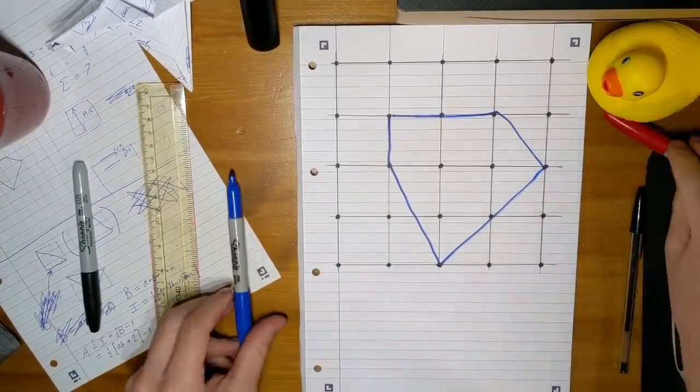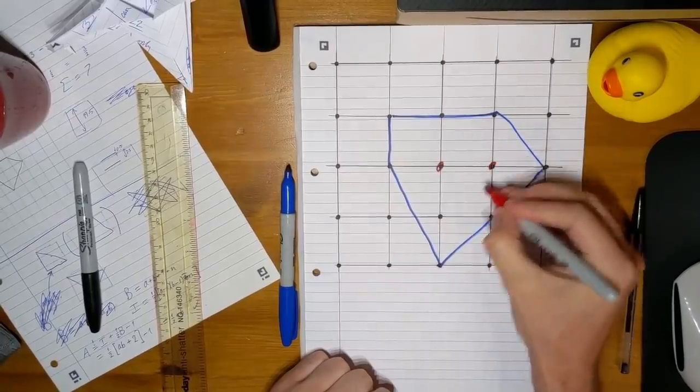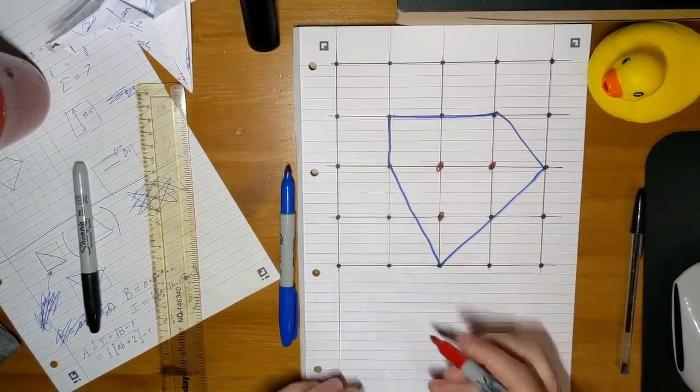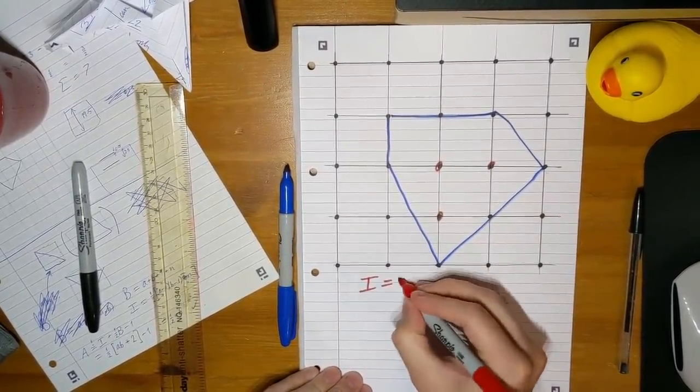Then you count up the number of dots inside the shape: one, two, three, and we call that i. So i equals three.